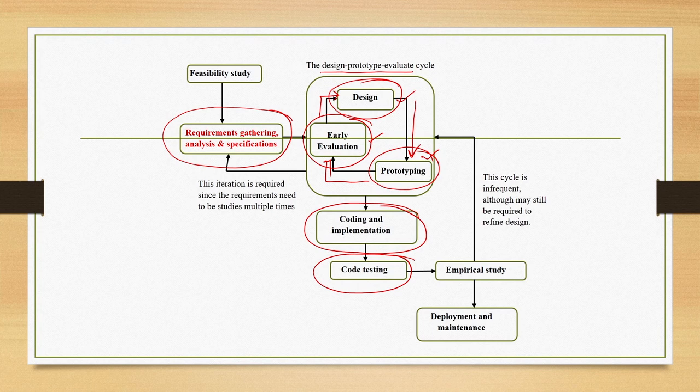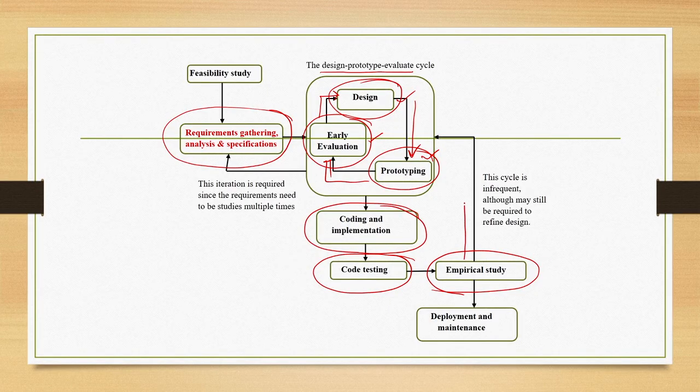Code testing will not tell us about the usability of the system; it will only tell us about the execution efficiency of the system. In order to know the usability, we need to carry out another type of test called empirical test, also known as empirical study or empirical research. Here we get our system tested with end users through a systematic and scientific process. The result of this test may reveal certain usability issues, and to take care of those issues we may need to refine our design. Ideally this should not be frequent because usability study is a costly affair.